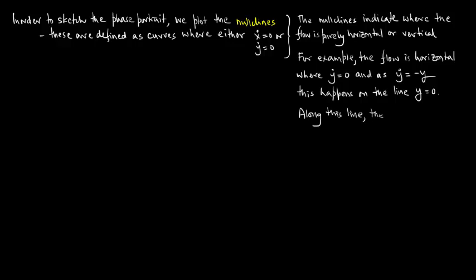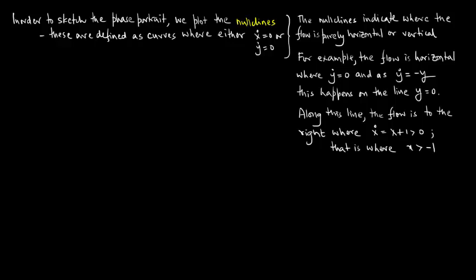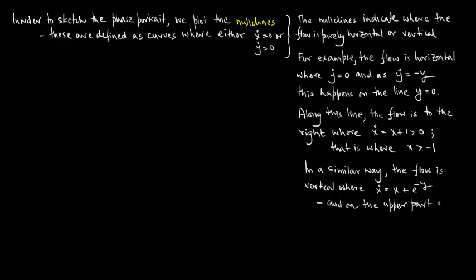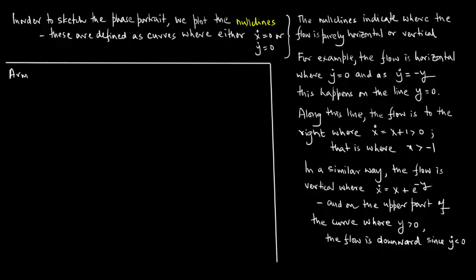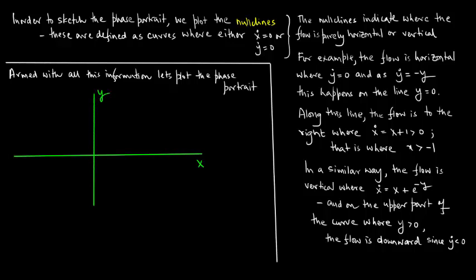Along this line the flow is to the right where x_dot = x + 1 > 0, that is where x > -1. Similarly, the flow is vertical where x_dot = x + e^(-y) = 0. On the upper part of that curve where y > 0, the flow is downward since y_dot < 0. Armed with all this information, let us plot the phase portrait — that is the familiar y versus x plane.